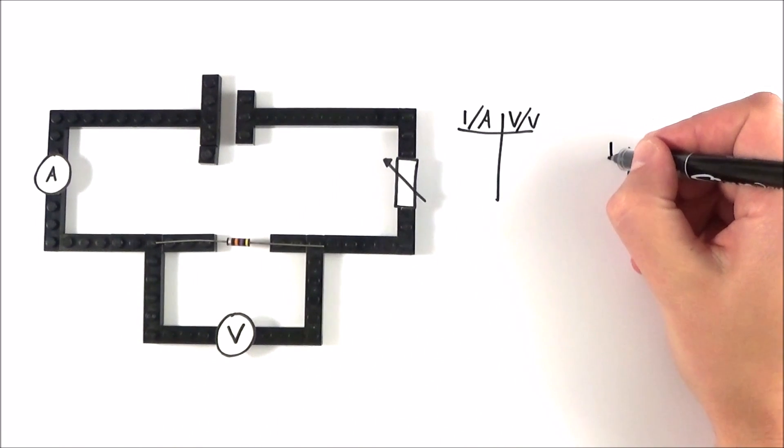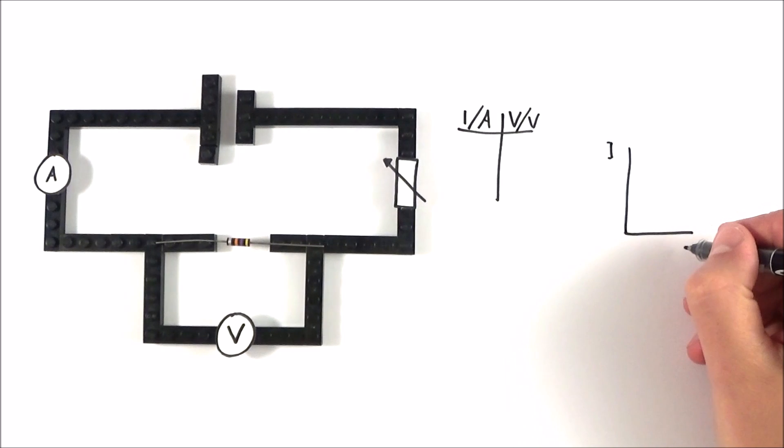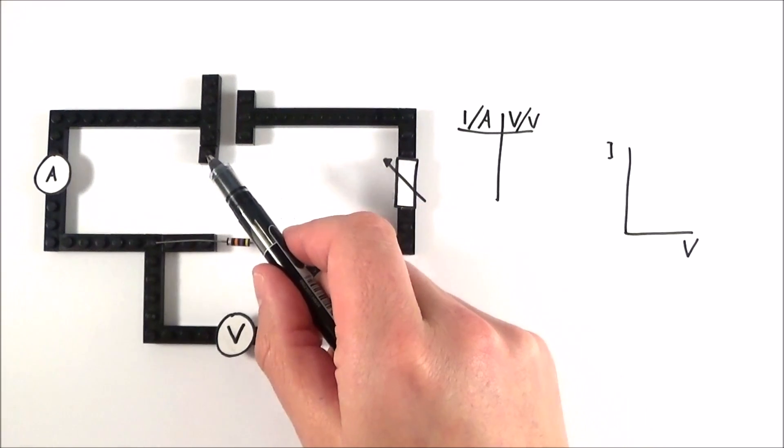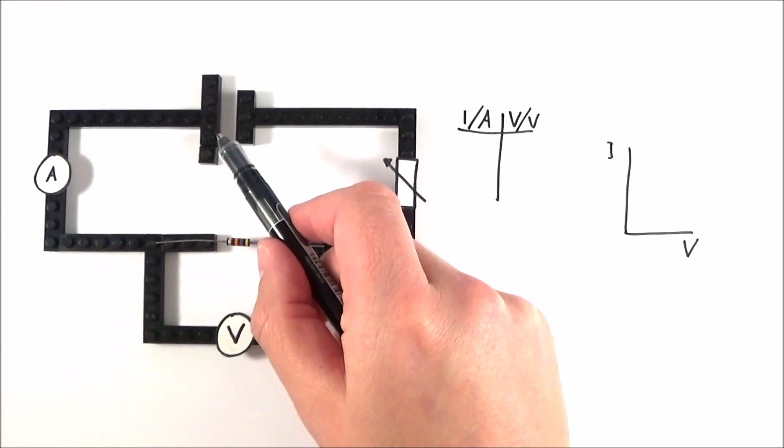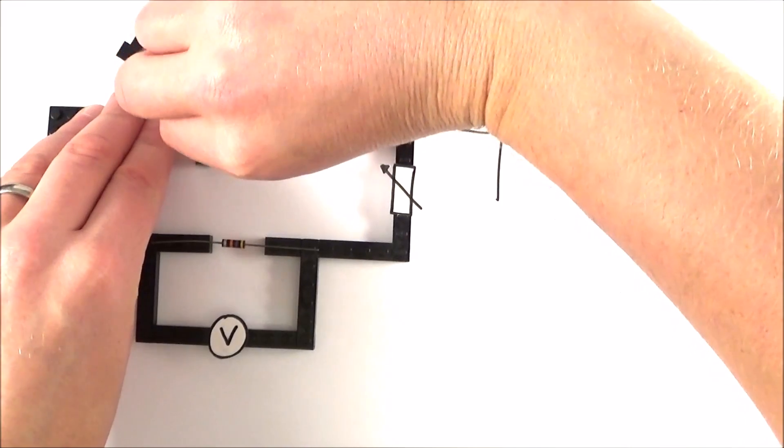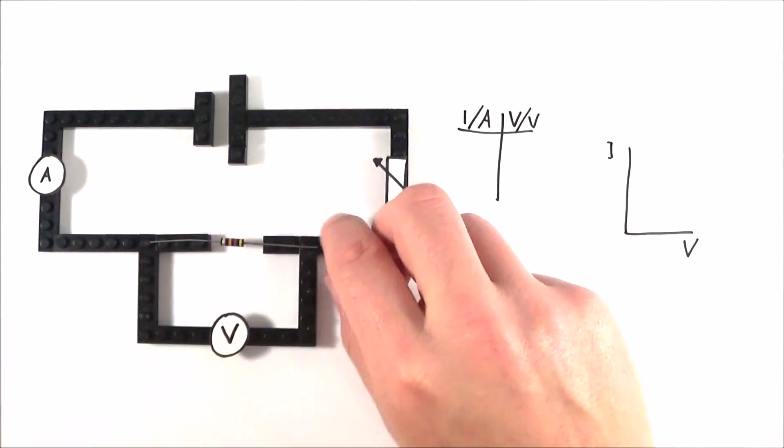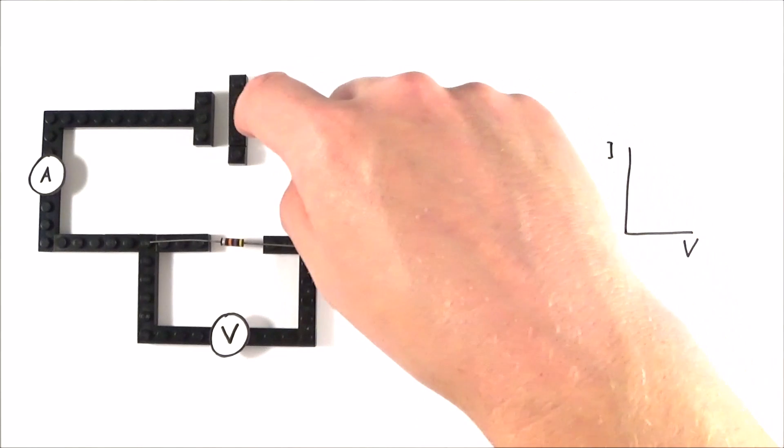I'm going to use I to go on the y-axis and I can measure the potential difference on the x-axis. But what I can also do with this circuit is I can also change the polarity of the cell that we have up here. So there we go.